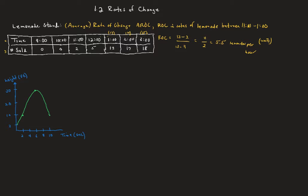Let's do another example from 1 to 2 o'clock — you can pause and work it yourself. At 2 o'clock we've sold 17 lemonades; at 1 o'clock we had sold 13. So we get 17 minus 13 over 14 minus 13, which is 4 over 1. Our average rate of change is 4 lemonades per hour.